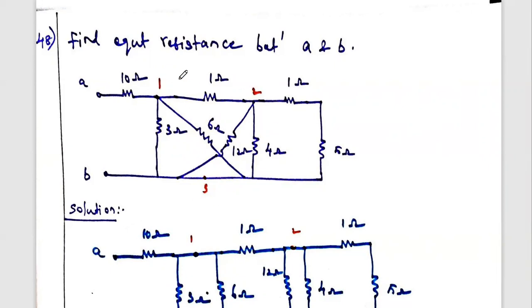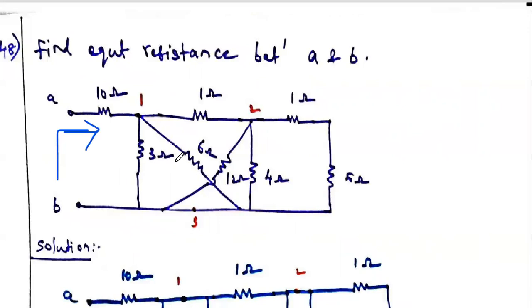Looking at the circuit: the three-ohm and six-ohm resistors have one end connected at node one and the other end at node three — they are in parallel. Similarly, the 12-ohm and four-ohm resistors both connect node two to node three — they are also in parallel. So three and six are in parallel, and 12 and four are in parallel.